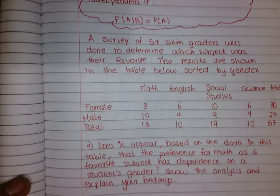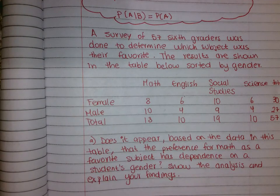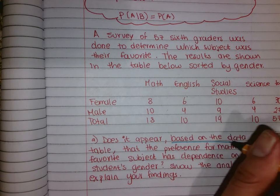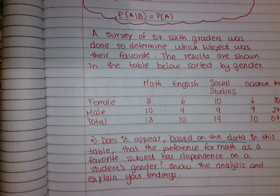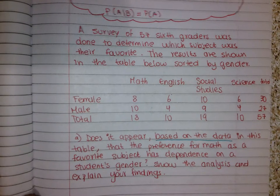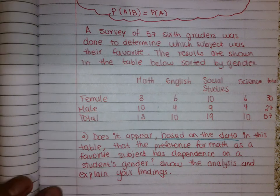Now we're going to do an example. A survey of 57 sixth graders was done to determine which subject was their favorite. The results are shown in a table sorted by gender — you have math, English, social studies, science, and the total, then female, male, and the total. The question asks: based on the data in this table, does it appear that a preference for math as a favorite subject has dependence on a student's gender? You need to base your answer on the data given. Show the analysis and explain your findings.